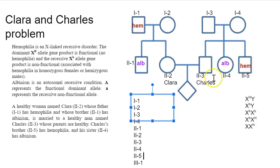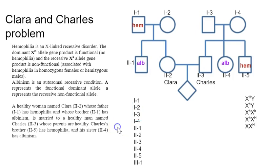So in pedigrees, squares denote males and circles denote females. This individual is a diamond because they're just an idea right now. Clara and Charles are wondering about the inheritance chances for their potential offspring.